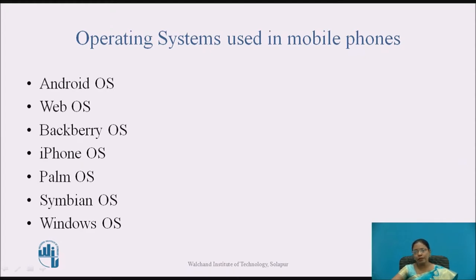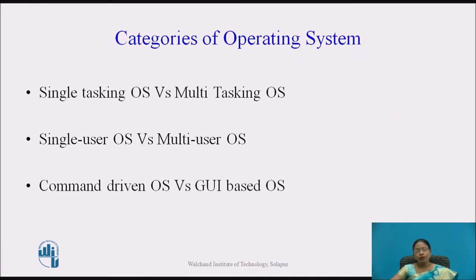We know all these names — Android, Windows, iPhone and others — but we may not realize these are operating systems or understand what exactly an operating system is. So let us look at that. Before going into the operating system in depth, there are categories of operating systems: single tasking OS versus multitasking OS, single user OS versus multi-user OS, and command-driven OS versus GUI-based OS.